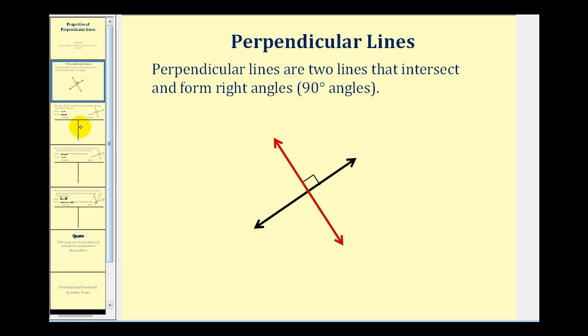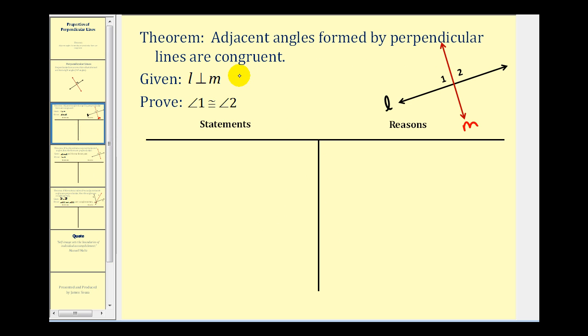Let's take a look at our theorem. The theorem we want to prove is that adjacent angles formed by perpendicular lines are congruent. We're given that line L is perpendicular to line M. We want to prove angle one is congruent to angle two.